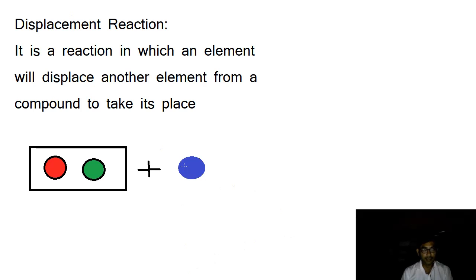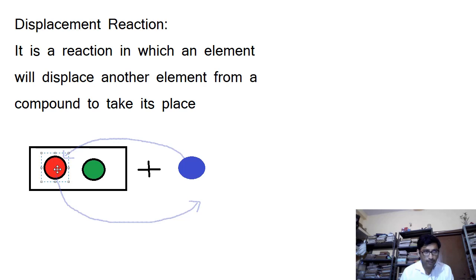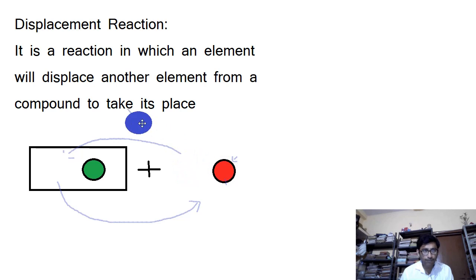In a displacement reaction, element blue will displace element red from its place and take its place. So element red will come out, and element blue will fit into that place. That is what a displacement reaction is.